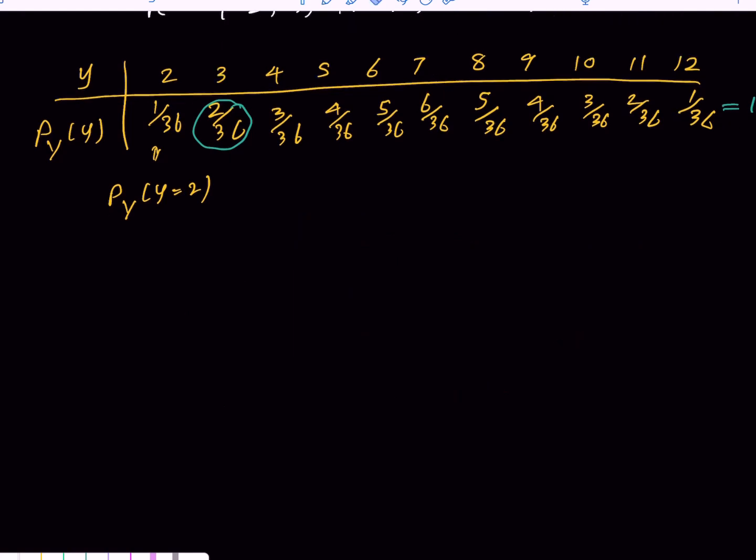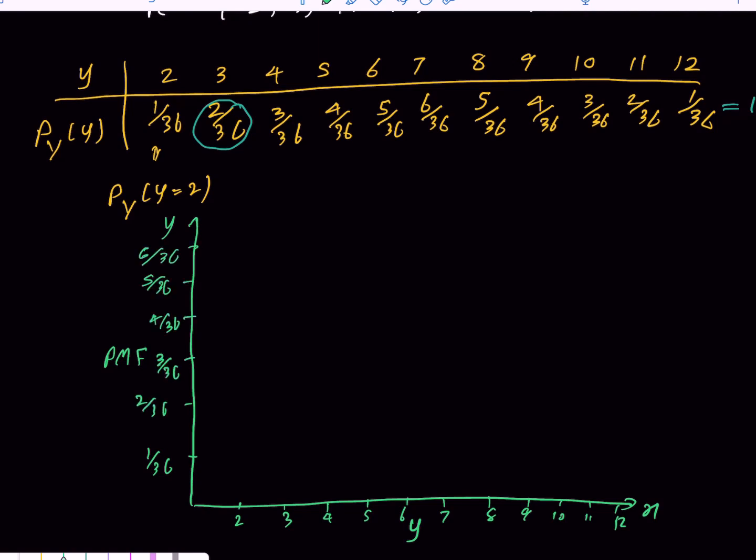Let me show you how to graph this probability mass function. We have the y-axis and x-axis. In the y-axis, we have the PMF, probability mass function. In the x-axis, we have Y values: 2, 3, 4, up to 11, 12. Here we have 1 over 36, 2 over 36, up to 6 over 36. Y equals 2 gives 1 over 36, Y equals 3 gives 2 over 36, and so on.